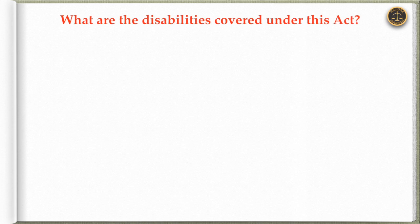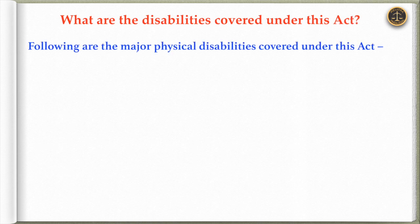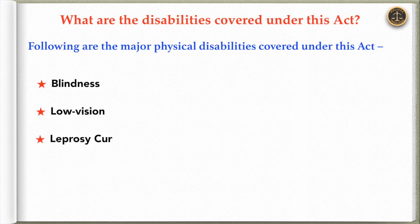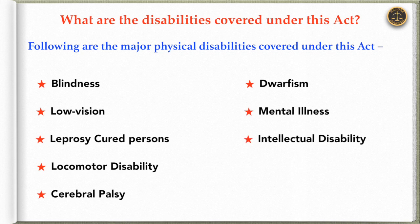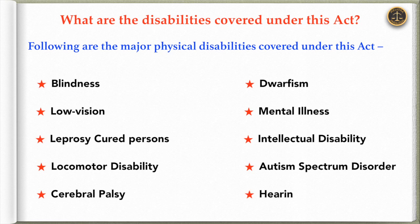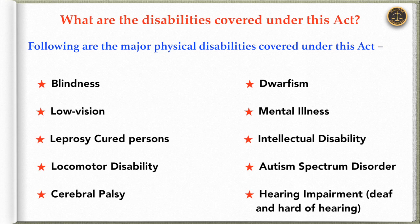The following are the major physical disabilities covered under this act: blindness, low vision, leprosy-cured persons, locomotor disability, cerebral palsy, dwarfism, mental illness, intellectual disability, autism spectrum disorder, hearing impairment, deaf and hard of hearing.